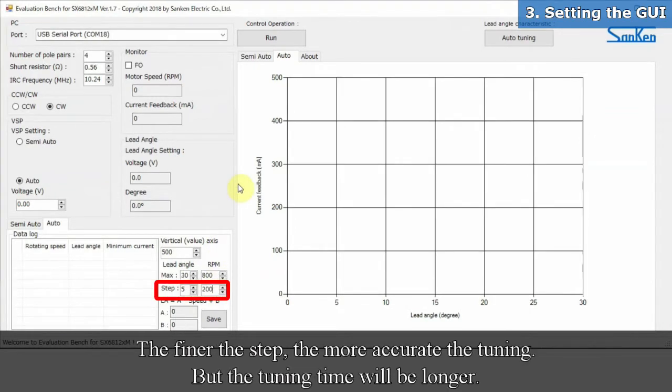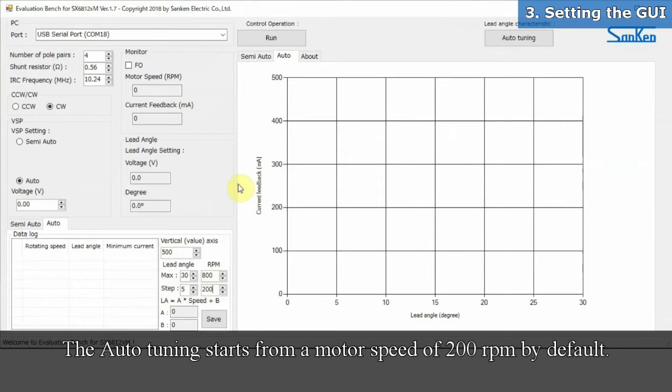The finer the step, the more accurate the tuning, but the tuning time will be longer. The auto-tuning starts from a motor speed of 200 RPM by default.